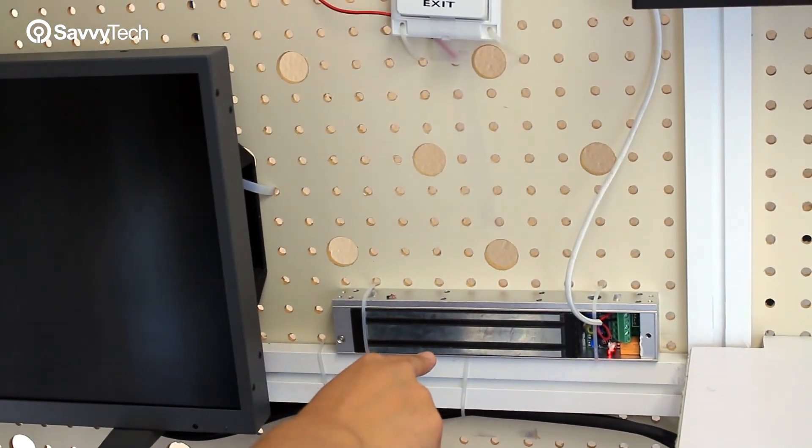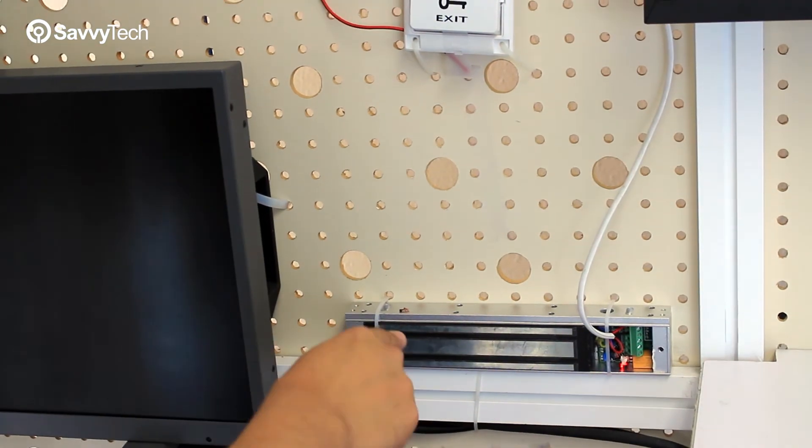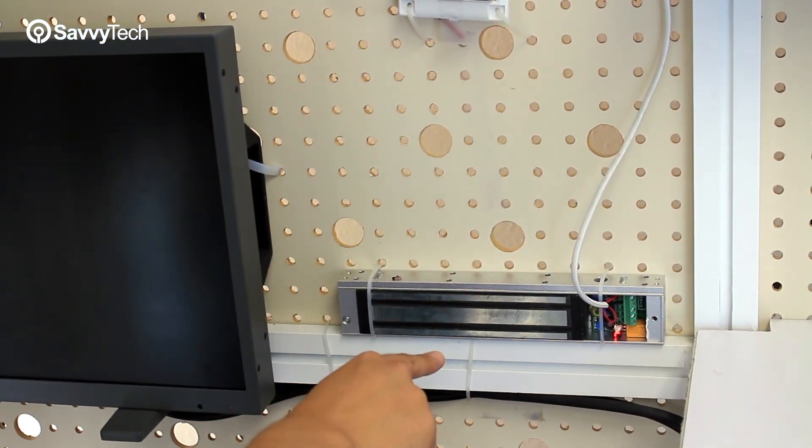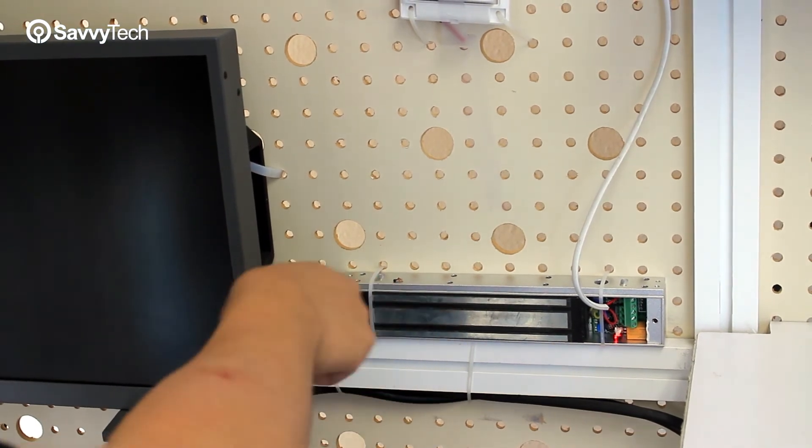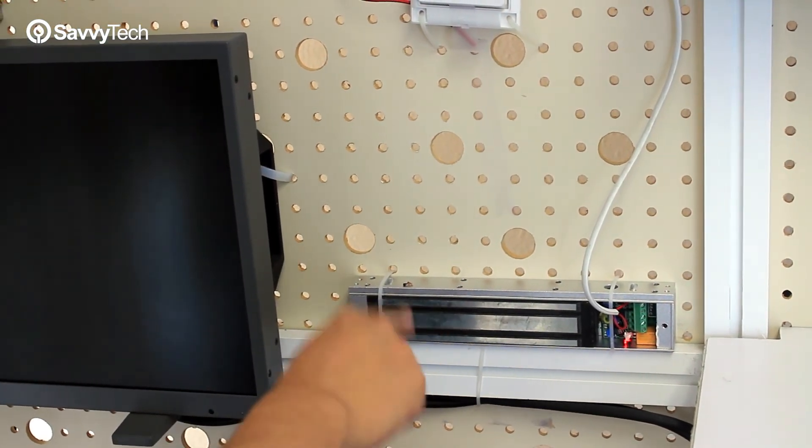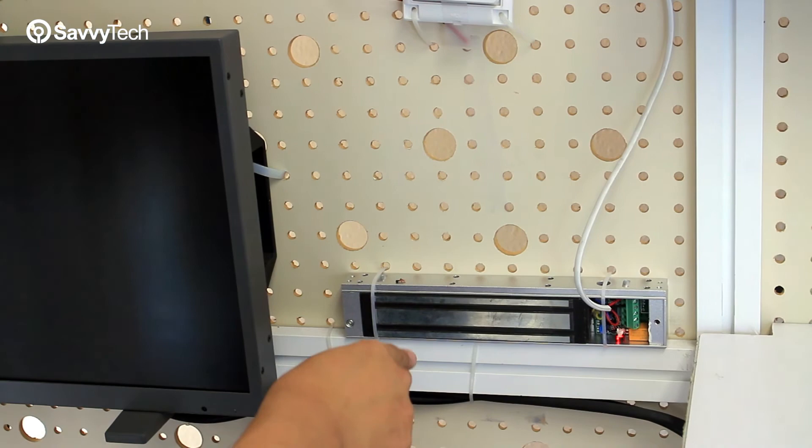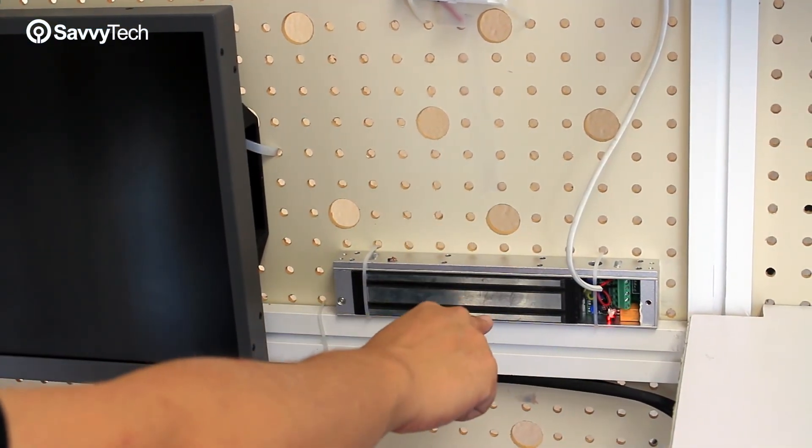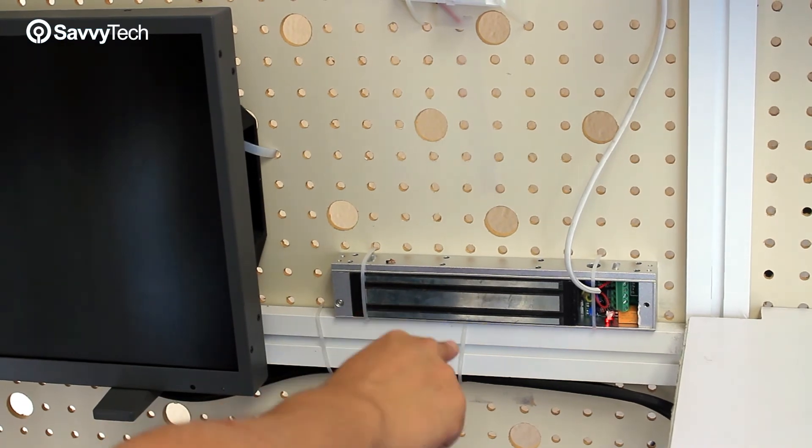One thing that you want to keep in mind is that constant power has to be supplied to the door lock in order to keep it closed. If power is cut off, then the door lock will be released. It's also good to know that because in case of emergencies, if the programming does not work, then cutting power to the door lock will be able to release it to allow people to exit the building.